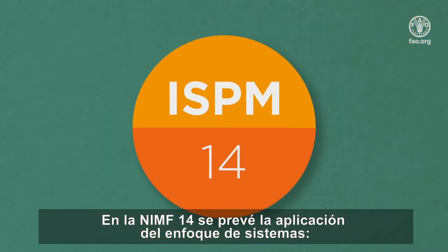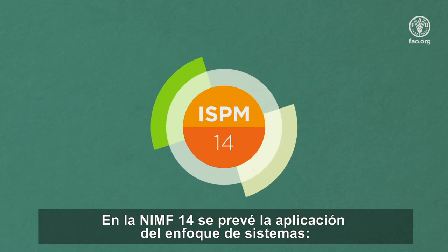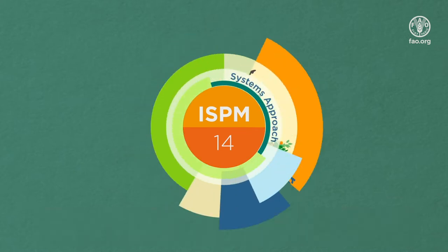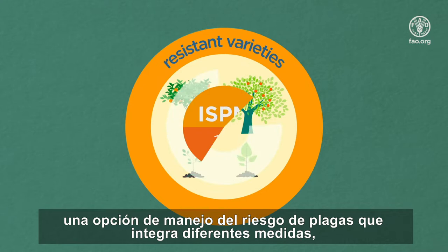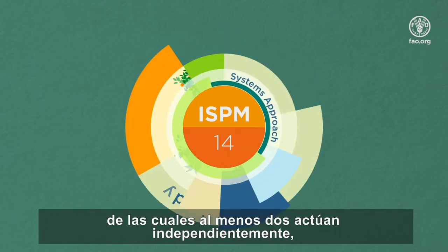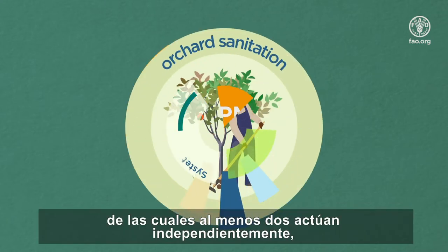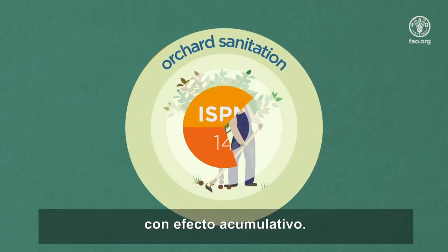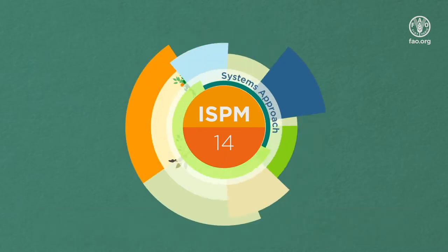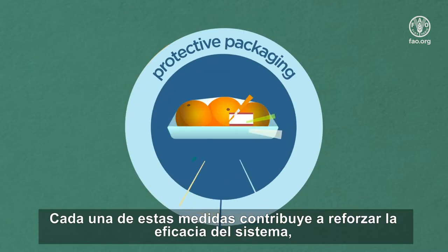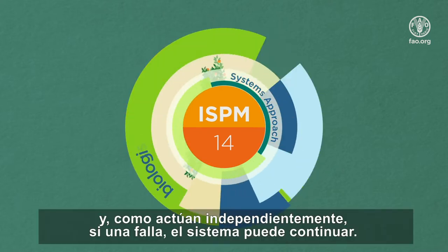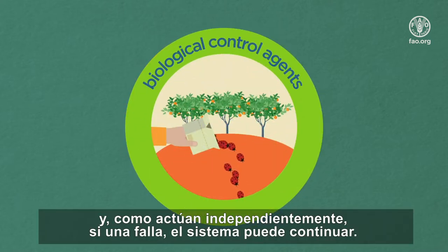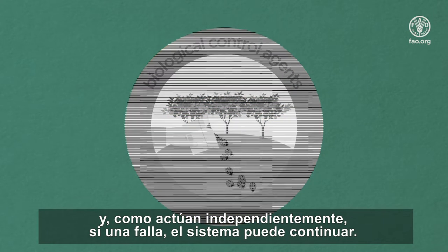ISPM 14 establishes the practice of systems approach, a pest risk management option that integrates different measures, at least two of which act independently with cumulative effect. Each of these measures reinforces the effectiveness of the system, and because they act independently, if one fails, the system can continue.